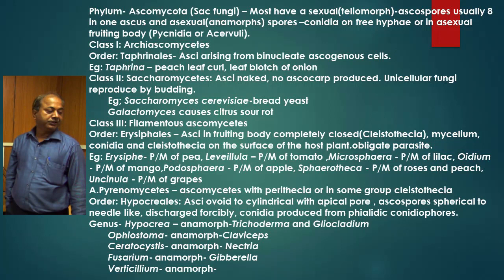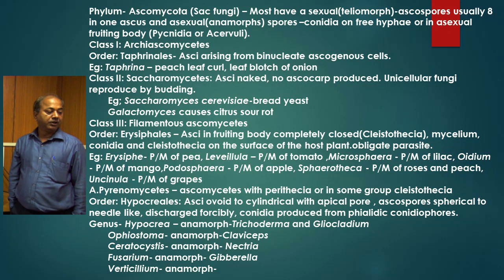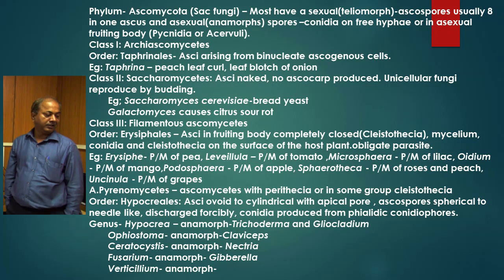Moving to Ascomycota, also known as sac fungi. Most have sexual (teleomorph) ascospores, usually eight in one ascus, and asexual (anamorph) states. The first class is Archiascomycetes, which produces naked asci arising from binucleate ascogenous cells. The genus Taphrina causes two diseases: peach leaf curl and leaf blotch of onion.